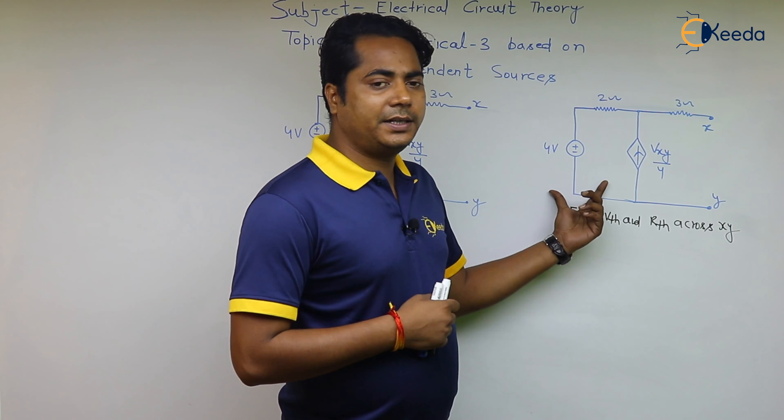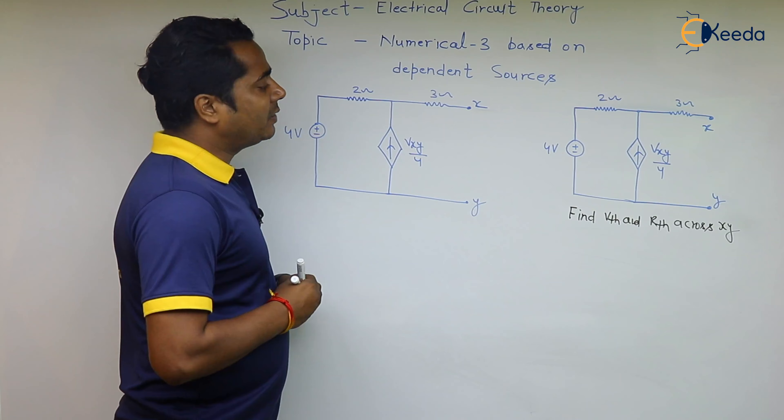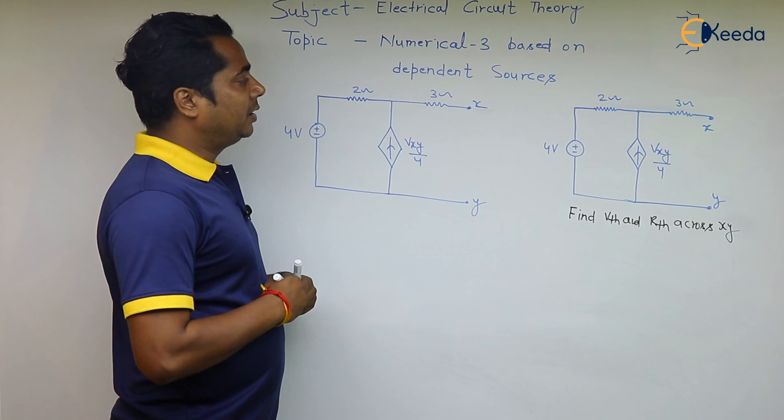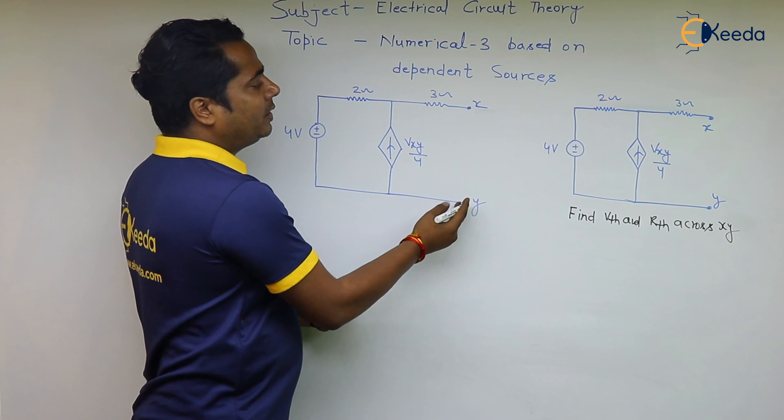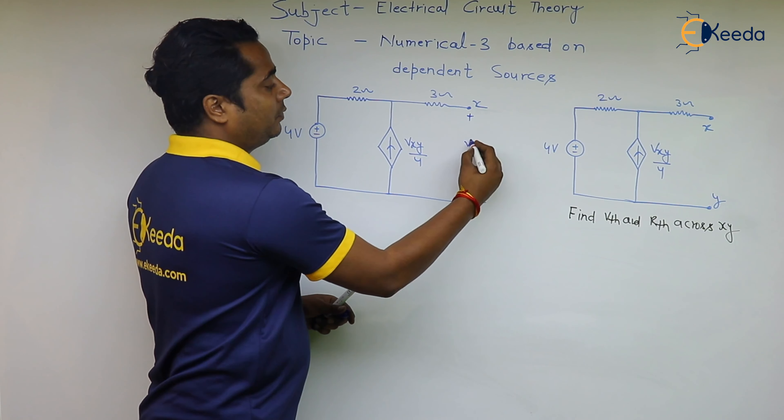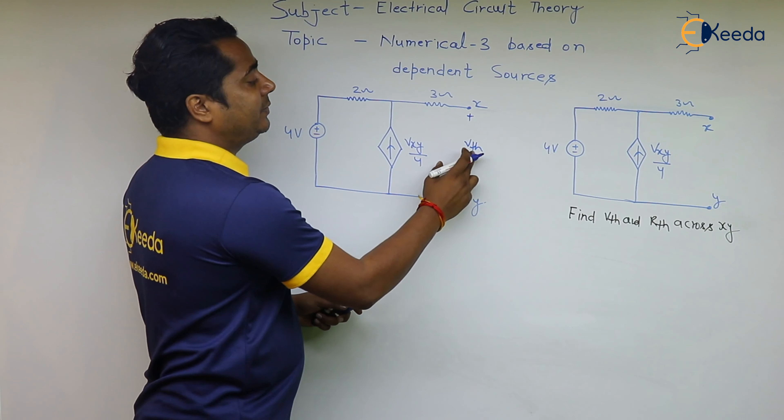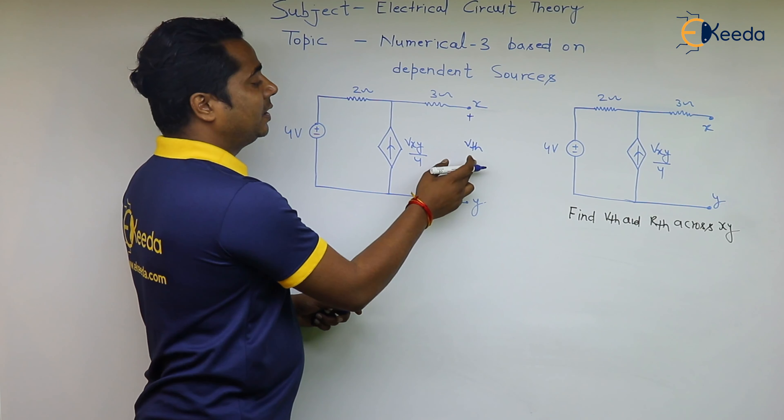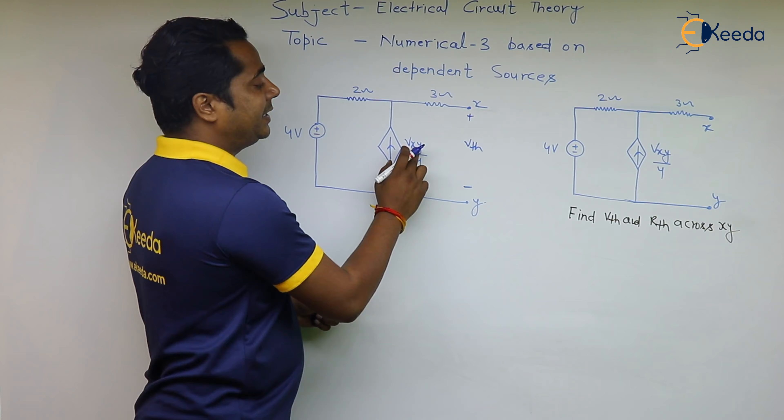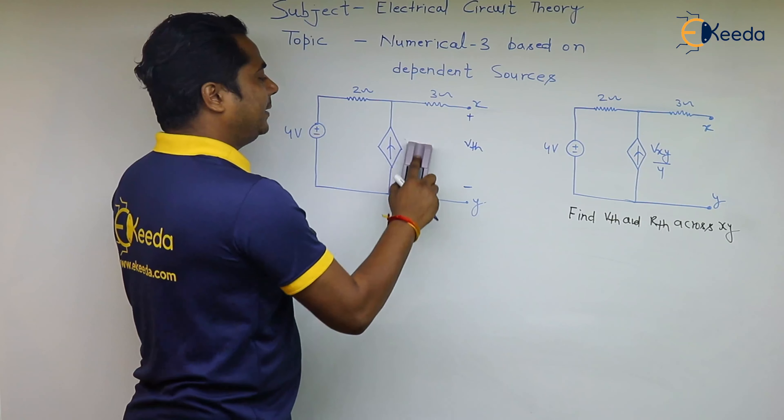See guys, first we will calculate the value of Vth. It is directly open and we will assign this plus minus Vth. So if this voltage between x and y is Vth, we have to change this Vxy into Vth by 4.